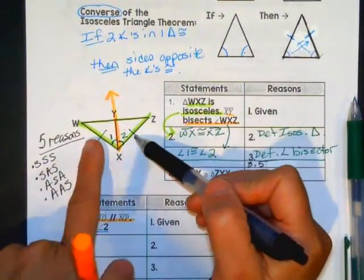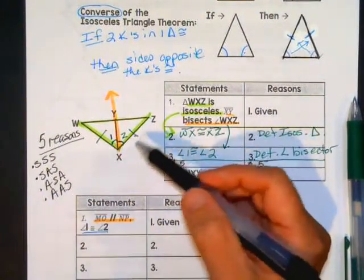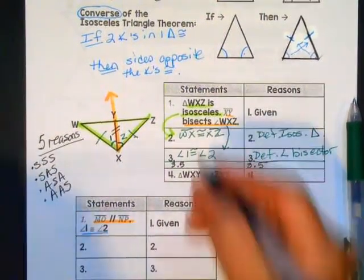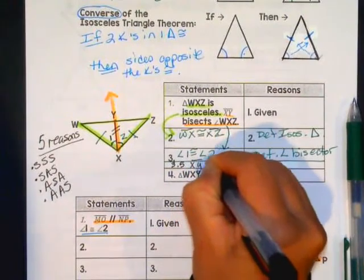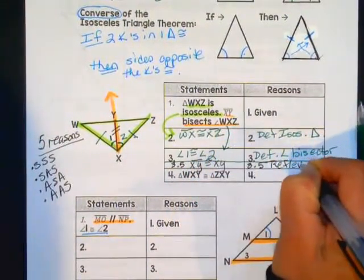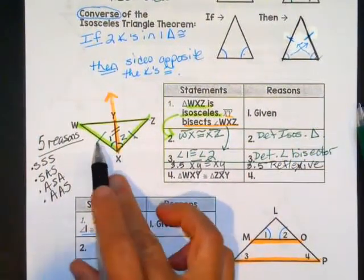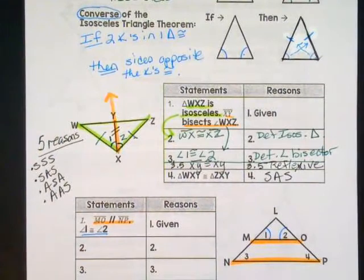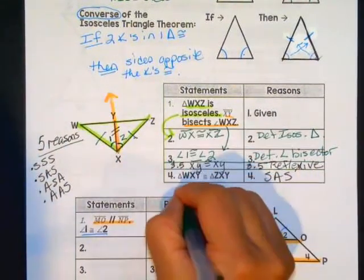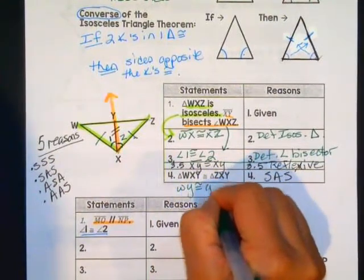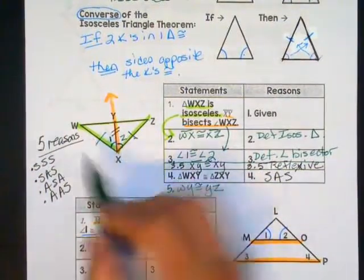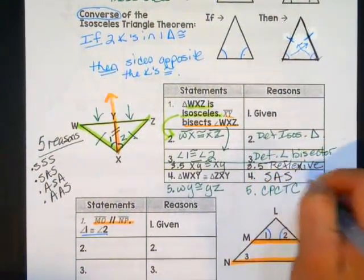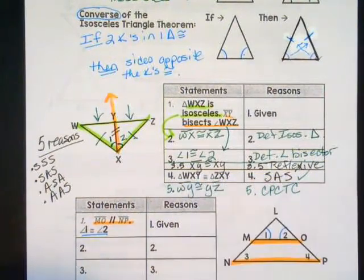One thing I can say is the shared side XY is congruent to XY by reflexive. That should be enough to say the triangles are congruent by side-angle-side. I could add another statement: WY is congruent to YZ. Why would I be able to say those two are congruent? That's CPCTC — my triangles are congruent, so now the corresponding parts will also have to be congruent.